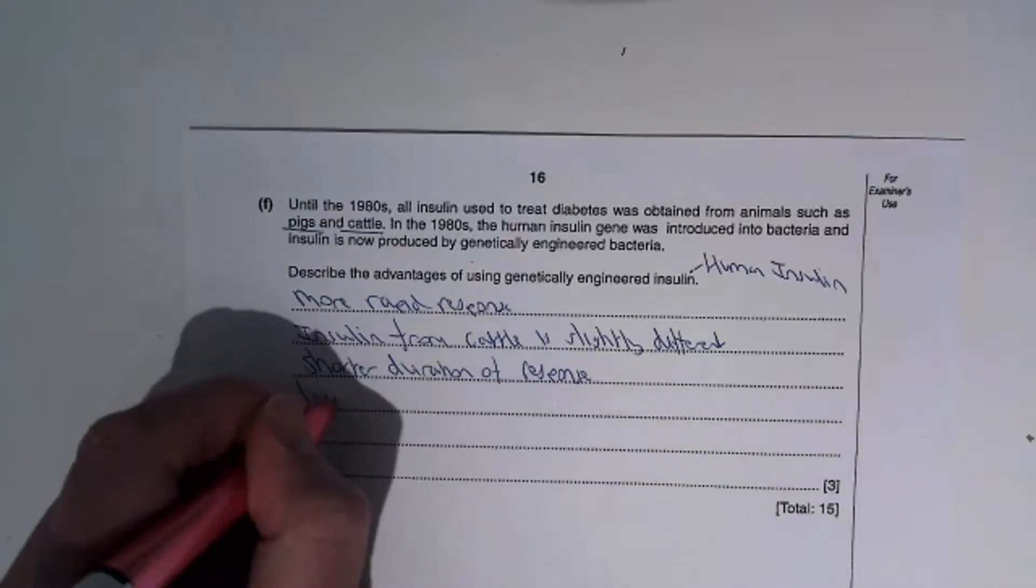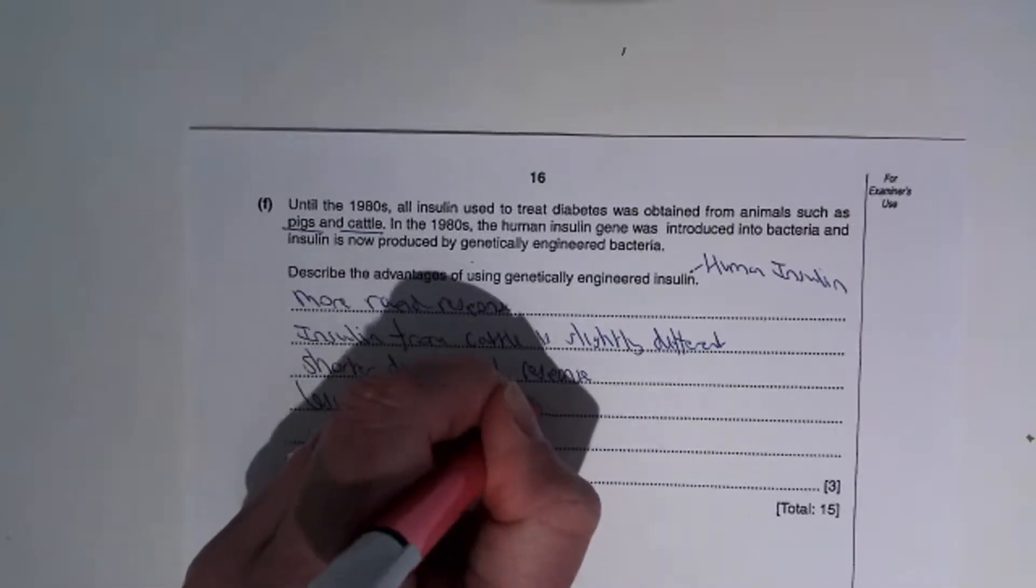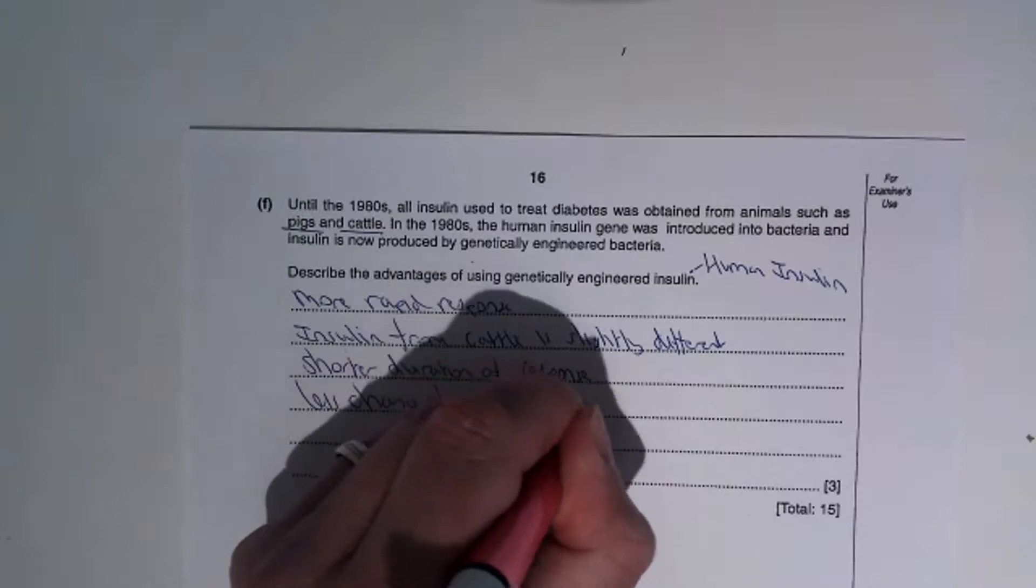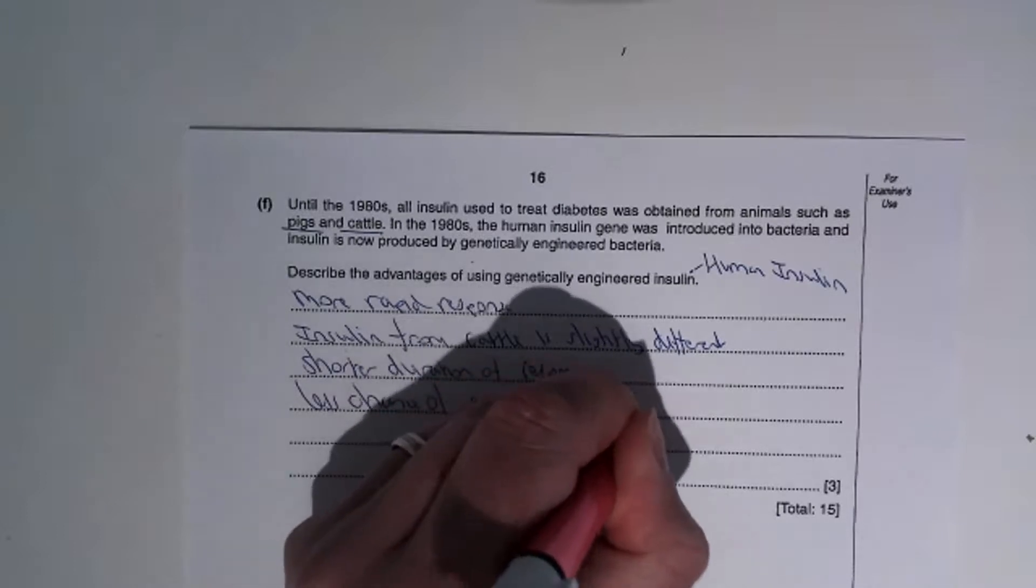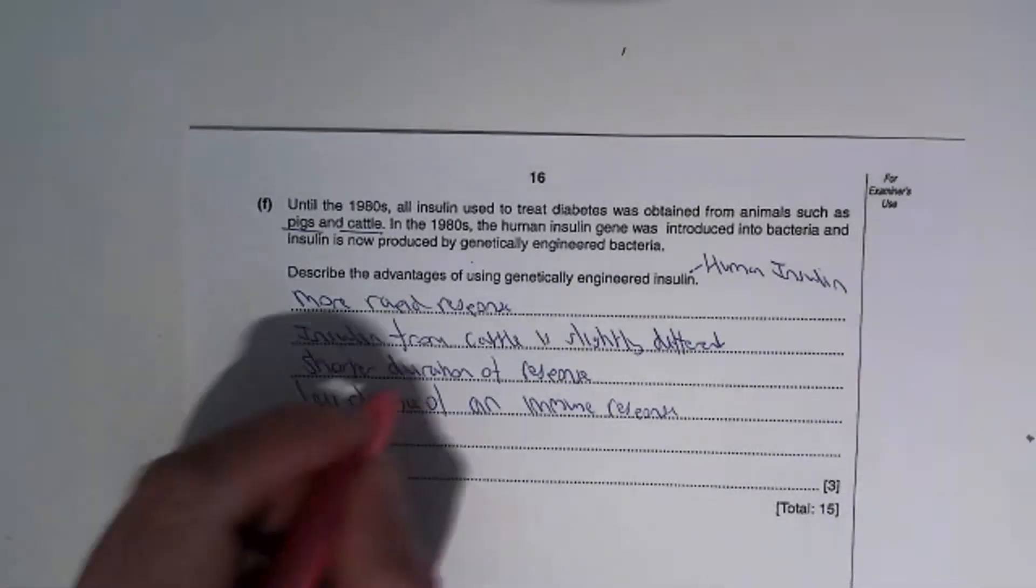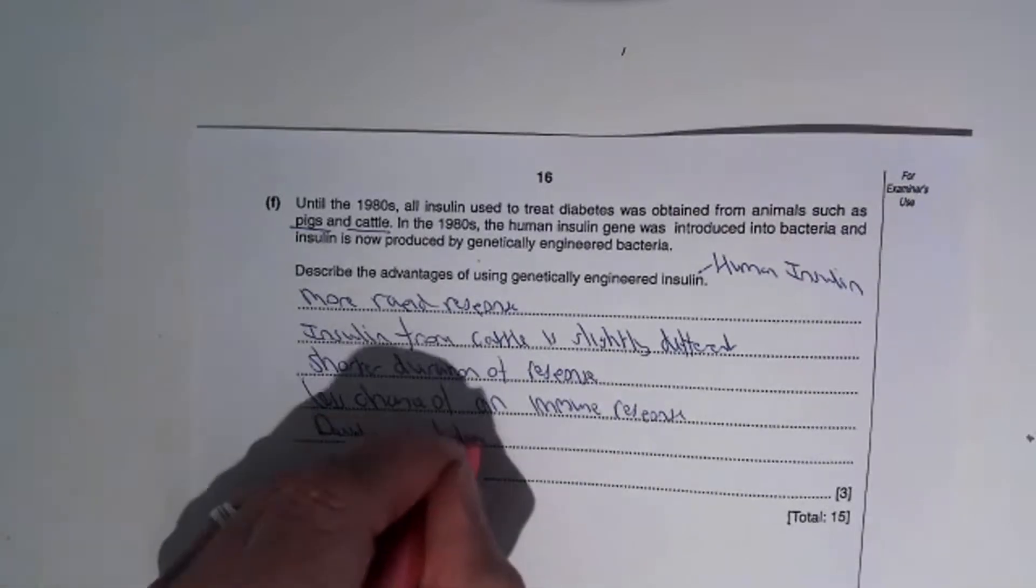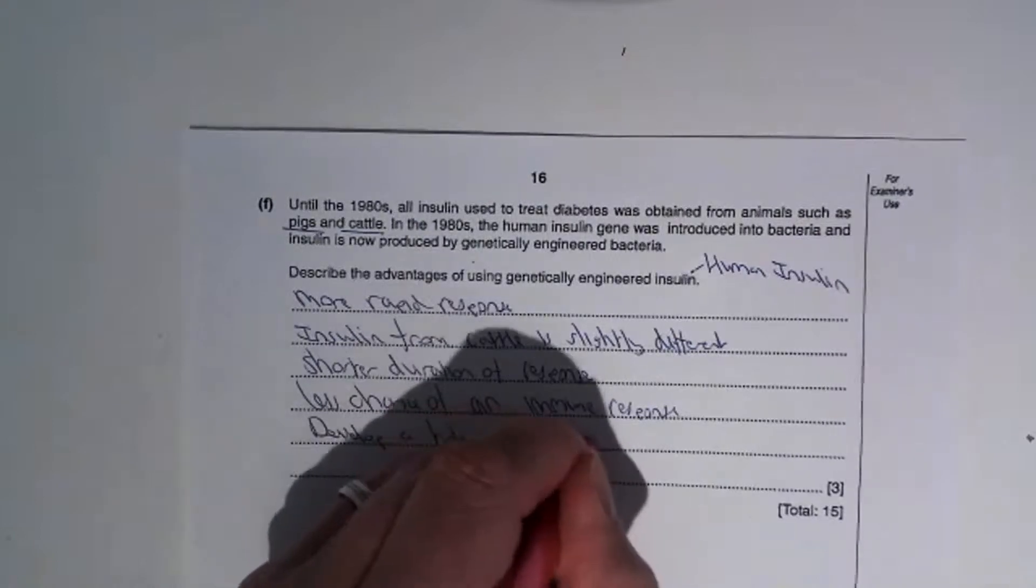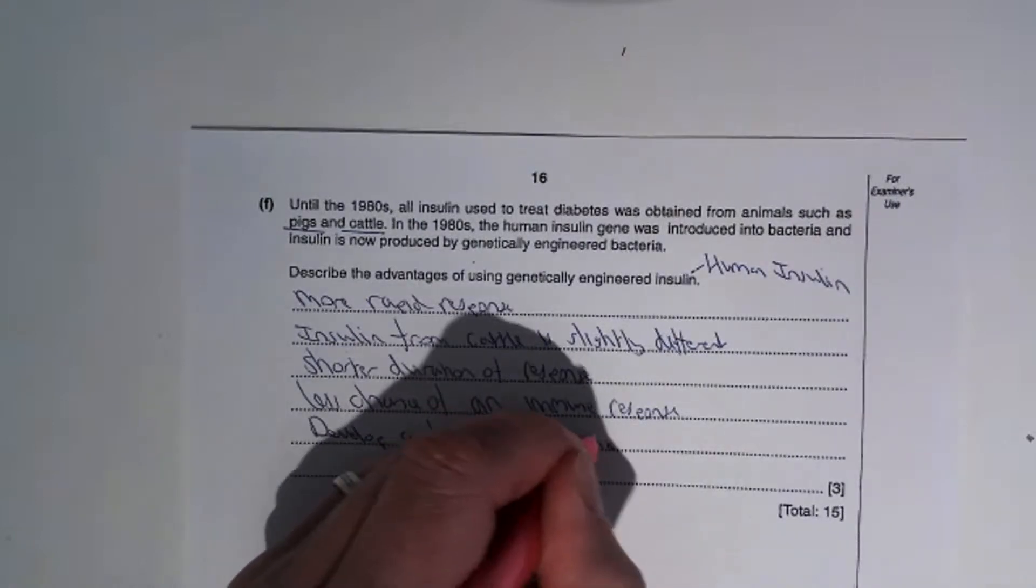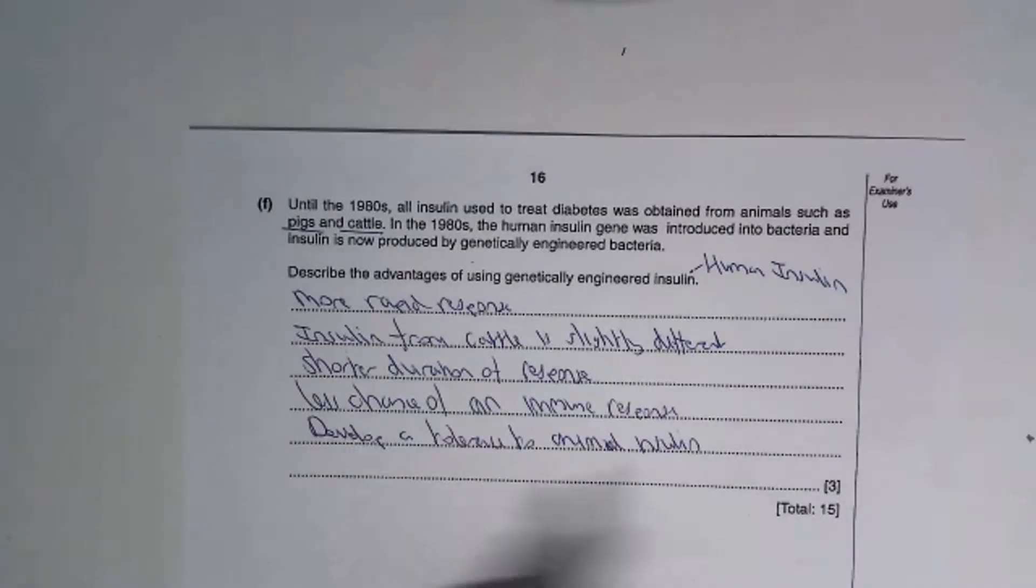There's also less chance of an immune response or tolerance to the insulin. People might develop a tolerance to animal insulin, so the body just stops reacting to it.